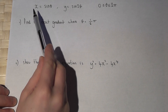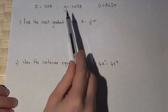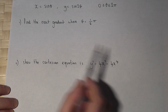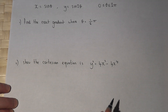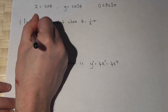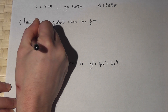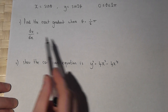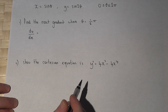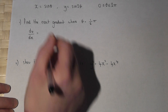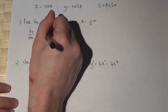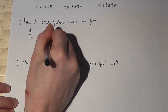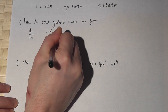In this question, we're told that x equals sine theta and y equals sine 2 theta. To find the exact gradient, we need to find dy by dx. But y and x are given in terms of theta, so to work this out we have to use the chain rule, which in this case states that dy by dx equals dy by d theta over dx by d theta.